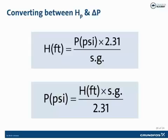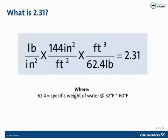To convert from head to PSI: head times the specific gravity of the fluid divided by 2.31 gives you PSI. The specific gravity of water is 1.0. The figure of 2.31 is derived from the specific weight of water. Since we calculate pressure in pounds per square inch, and there are 144 square inches in one square foot, and the weight of water between 32 and 60 degrees Fahrenheit is roughly 62.4 pounds per cubic foot, we multiply 144 divided by 62.4, which gives us 2.31.